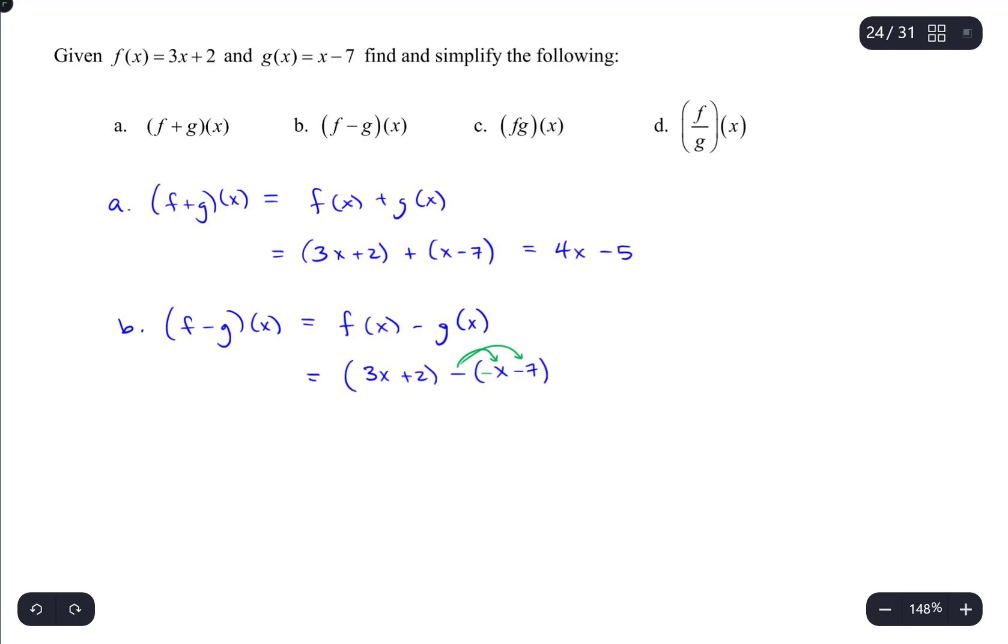So you'll end up with a negative x and a positive 7. It's very easy to ignore changing the sign of all the items in that set of parentheses. And then at that point, we will go through and combine like terms again. So 3x - x would be 2x, and then 2 + 7 is 9. So 2x + 9.